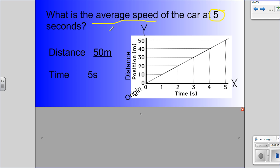It says average speed. So we put 50 meters as the distance. 5 seconds as the time. And then speed equals distance over time. 50 divided by 5.